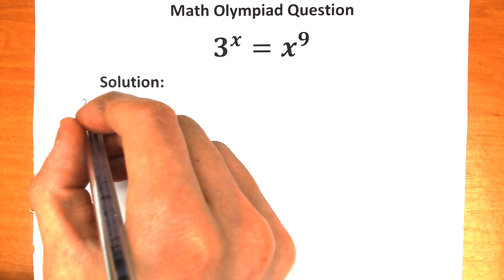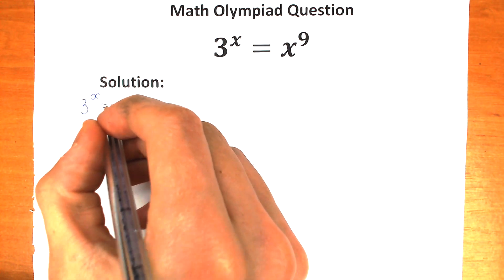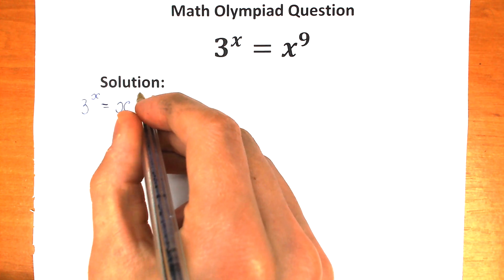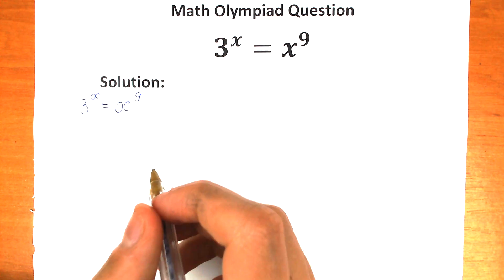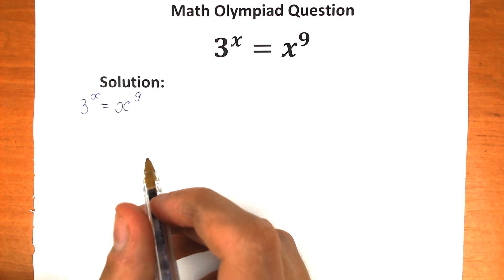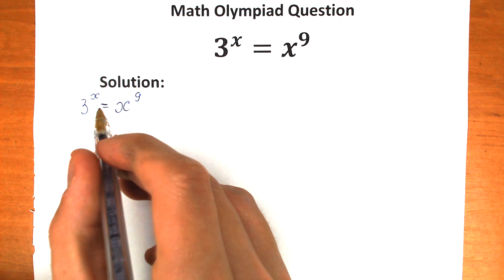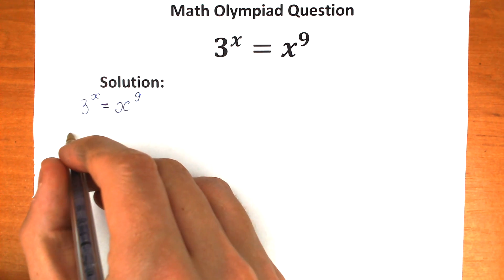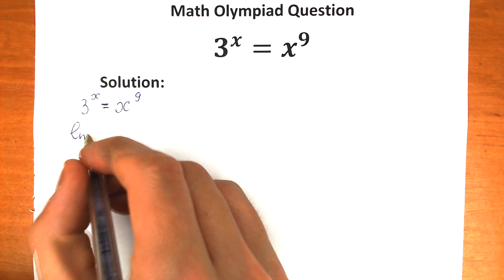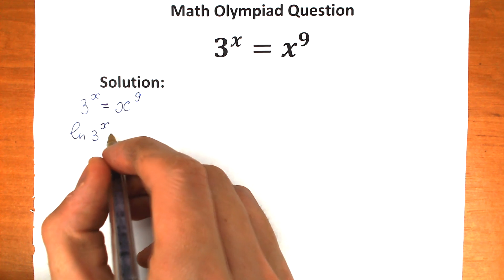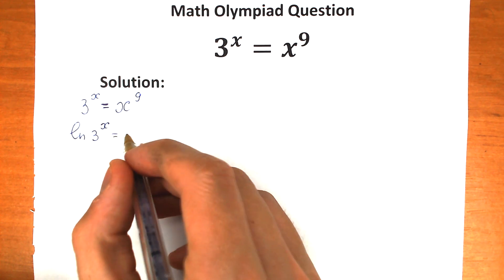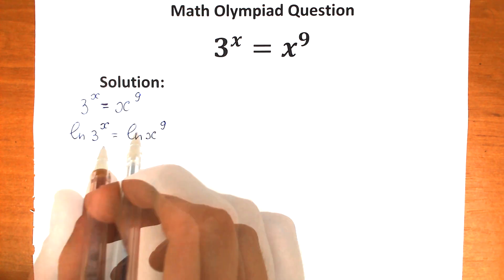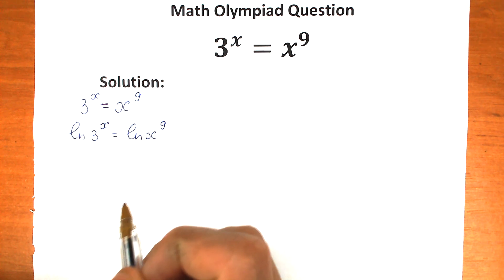So we have 3 to the x equal to x to the 9 — here is our challenge. First of all, let's apply natural log on both sides. So on the left hand side we have natural log of 3 to the x, equal to natural log of x to the 9.